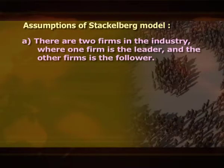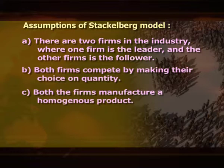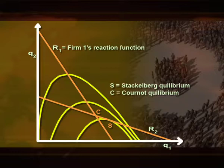The assumptions of the Stackelberg model are: first, there are two firms in the industry where one firm is the leader and the other is the follower; second, both firms compete by making their choice of quantity; third, both firms manufacture a homogeneous product; and fourth, price in the market depends on joint output. The Stackelberg model is a sequential game, not simultaneous as in the Cournot model. Stackelberg equilibrium is explained with the use of reaction curves shown in the figure.